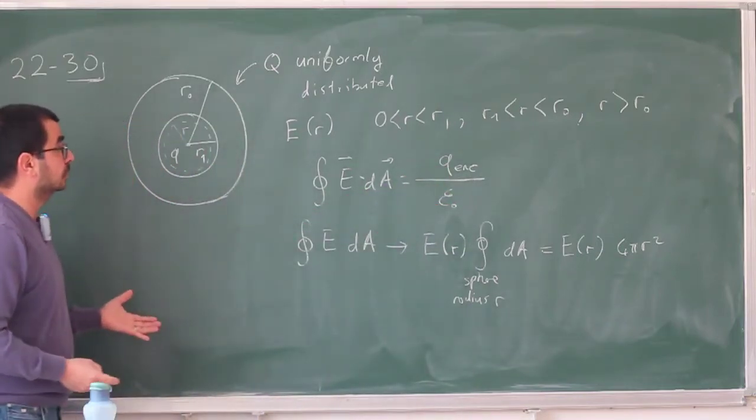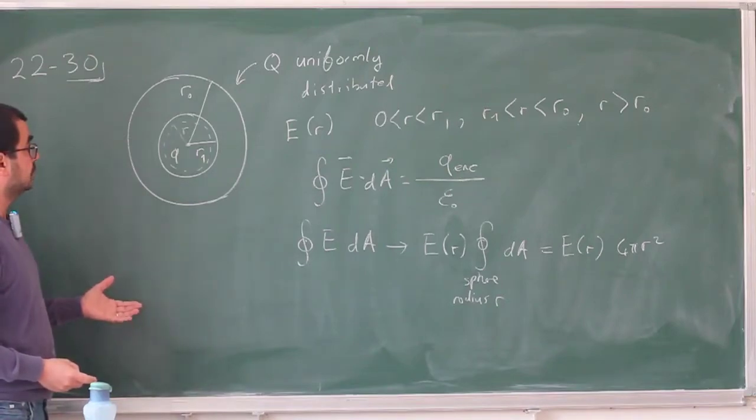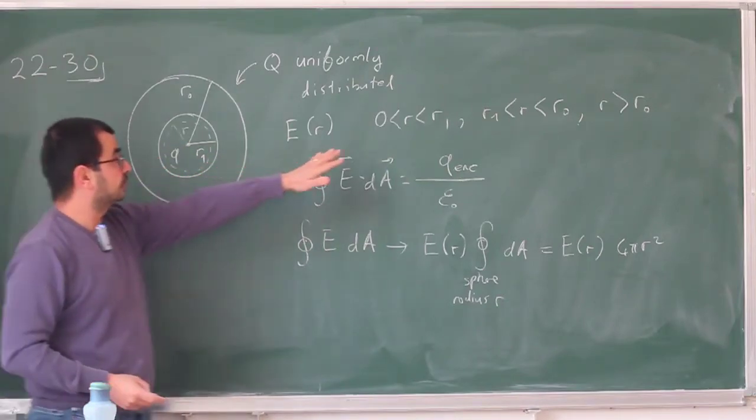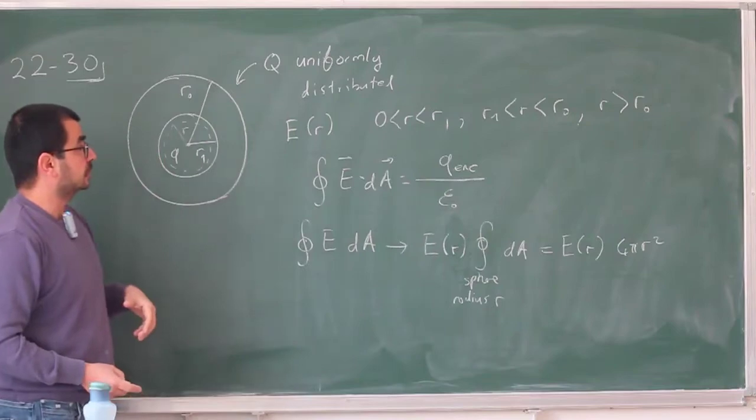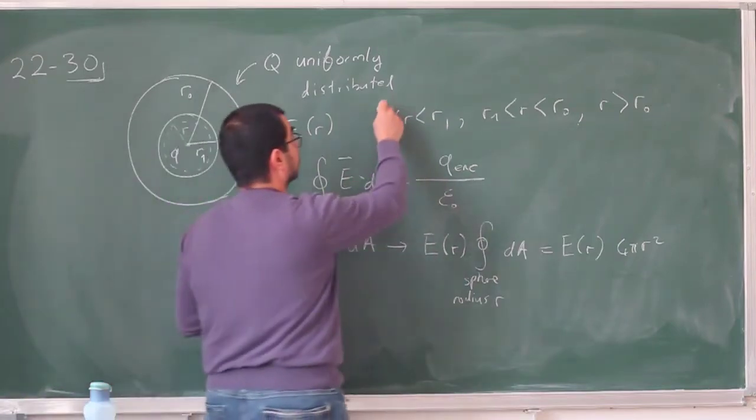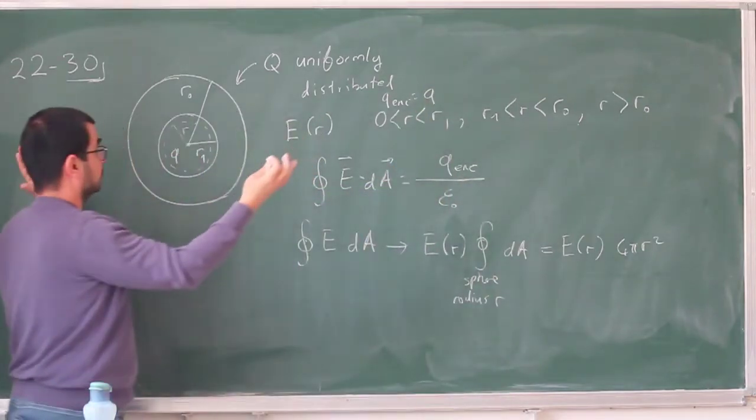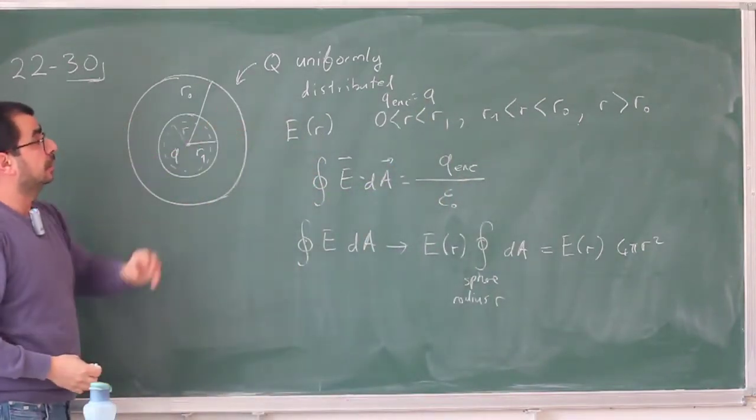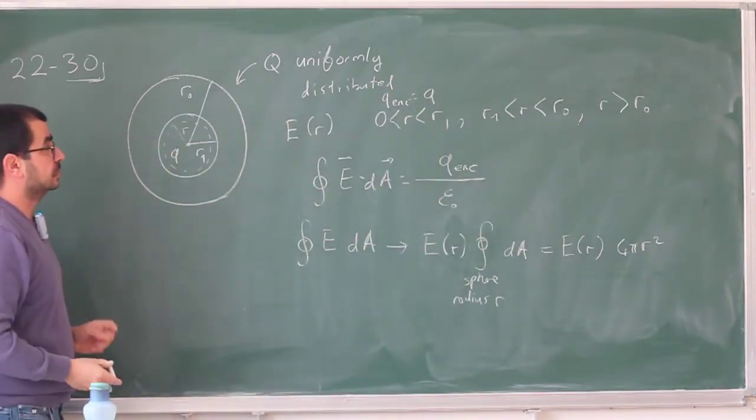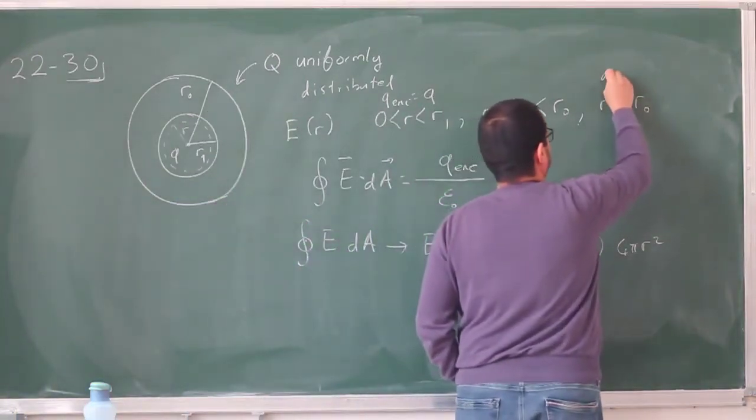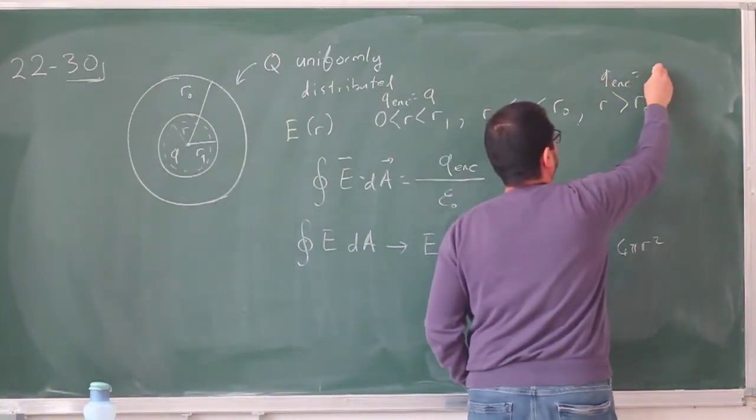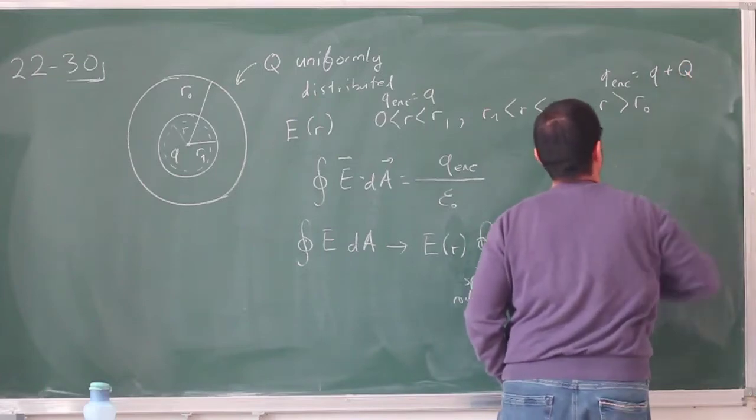So you need to find the q enclosed on these different cases. So for the first one, this q enclosed is trivial, it's just q. Everything else is just outside. For the r larger than r0 case, this is also trivial, q enclosed is going to be q plus Q.